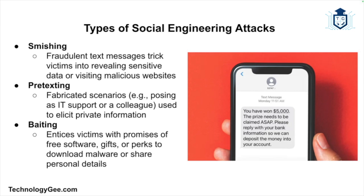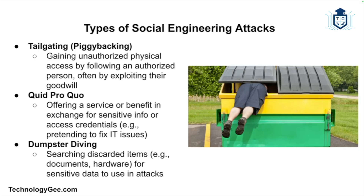Smishing, or SMS phishing, involves sending fraudulent text messages to trick recipients into revealing sensitive information or visiting malicious websites. Pretexting involves creating a fabricated scenario to obtain information from the target — the attacker may pose as a colleague, IT support, or another trusted figure. Baiting entices the victim with something desirable, such as free software or gifts, to trick them into downloading malware or revealing personal information. Tailgating or piggybacking occurs when an attacker gains physical access to a restricted area by following an authorized person.